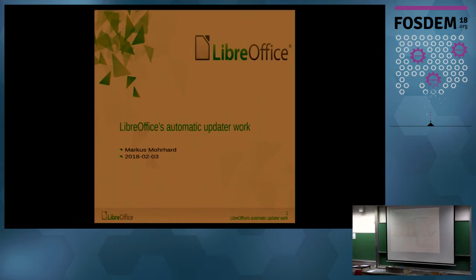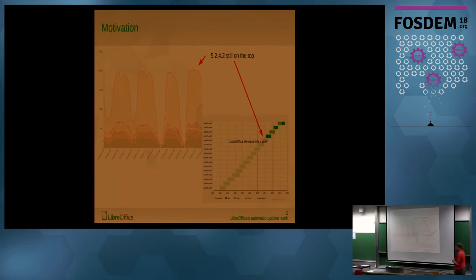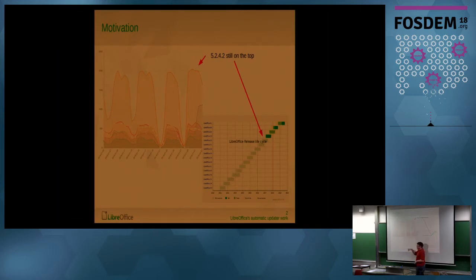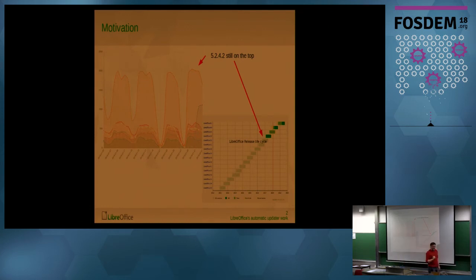Let's start with the motivation for working on an automatic updater, at least from my side. I did the work on the crash reporter, and here are the reports we got during the last month. The one that's much higher than the other versions is 5.2.4, a version that is not supported anymore. There's actually a newer 5.2 version — 5.2.7 — that has a lot of bug fixes.